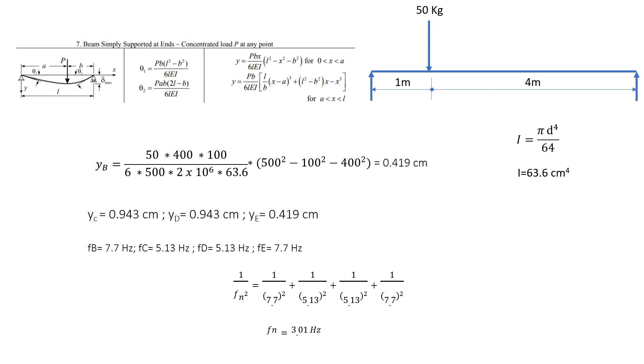Once we get the deflections, we can use ωₙ = √(g/δ), and then natural frequency is obtained by f = ωₙ/(2π). Once we get all natural frequencies, we apply Dunkerley's formula to obtain the lowest critical frequency, which is 3.01 Hz as obtained in this problem. Thank you.